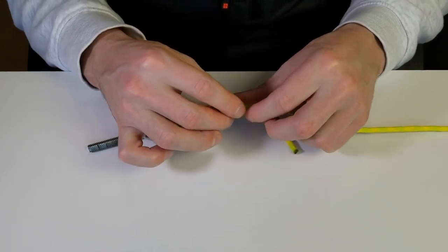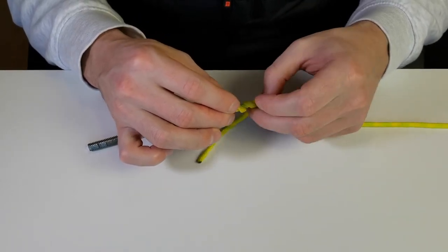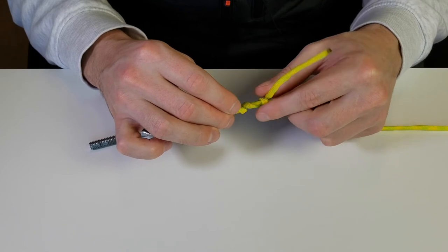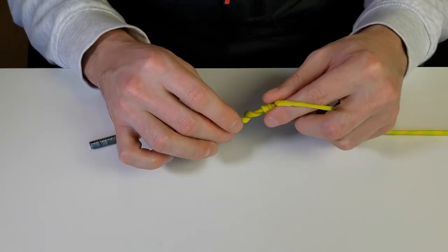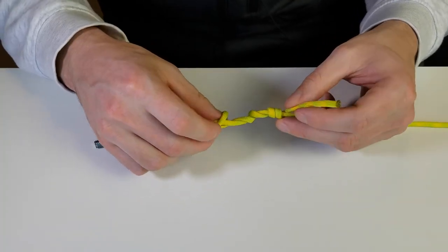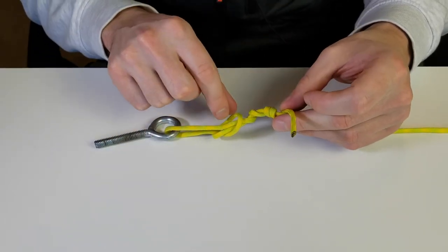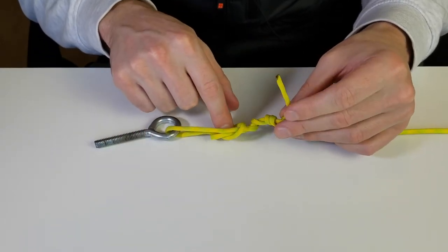Three, four, five wraps, and then all we have to do now is take this tag end here and put it back through the overhand knot.